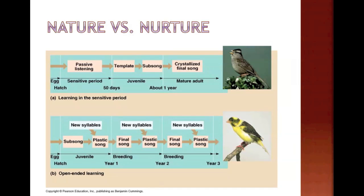There are two different types of learning — one more rooted in genetics and innate behavior than the other. At the top you can see the processes involved in a bird learning its song through imprinting. This is a type of learning where the behavior is acquired during a certain sensitive period, and these behaviors are usually unchangeable and rigid in form. In the example of song learning through imprinting, you've got the sensitive period, the bird forms a template, then a sub-song, and then it has a crystallized, finalized song.